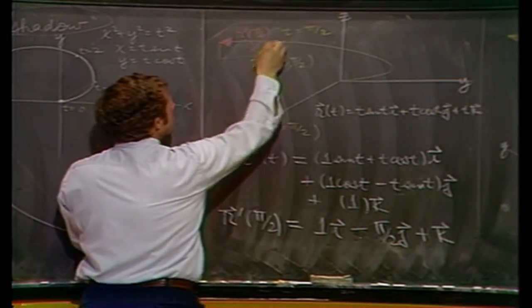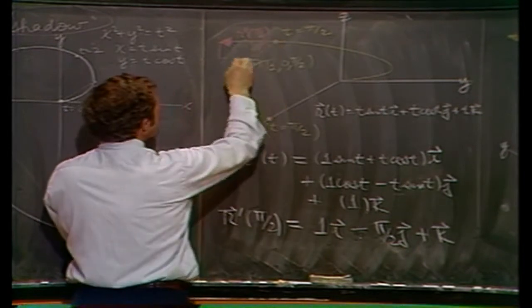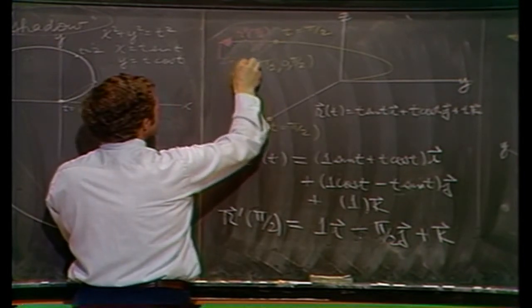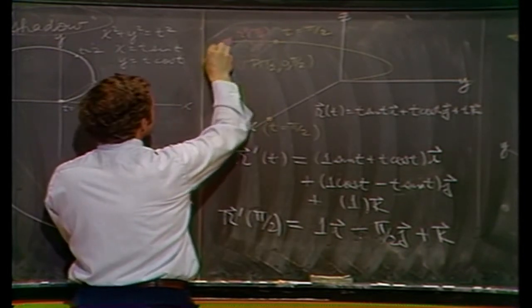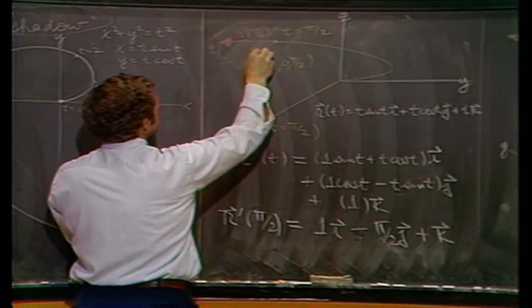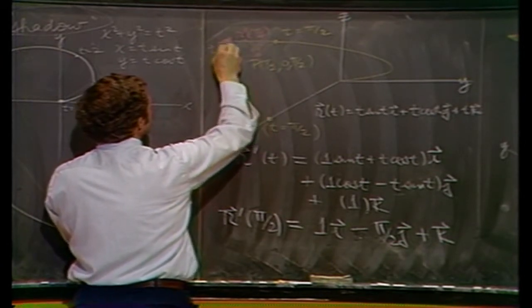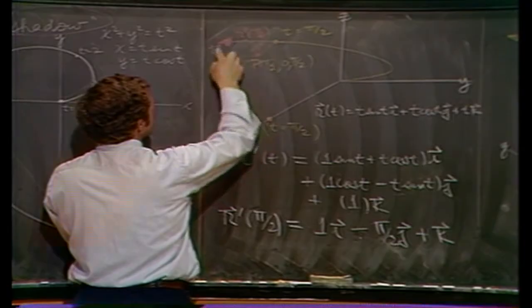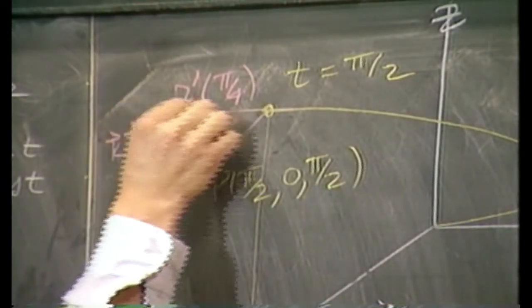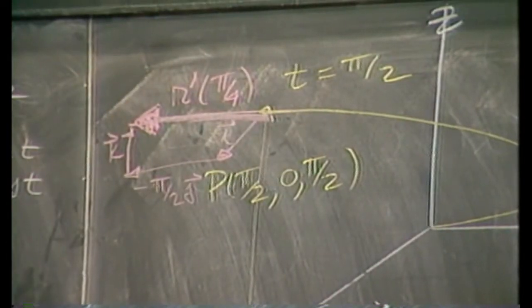So one more time, here's i, add to it a minus π/2 j, add to that a k in your old parallelogram law rule, and that vector sum should be that tangential vector to the curve at that particular point.